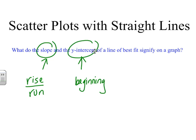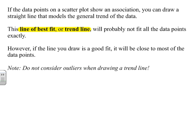Now what we're really going to be focusing on today is this thing called a line of best fit. We know what a scatter plot is - data that we put on a coordinate plane, usually in the first quadrant, and we indicate what our data represents by putting a dot on how the two data sets compare. If the data points on a scatter plot show that association, you can draw a straight line that models the general trend of the data.